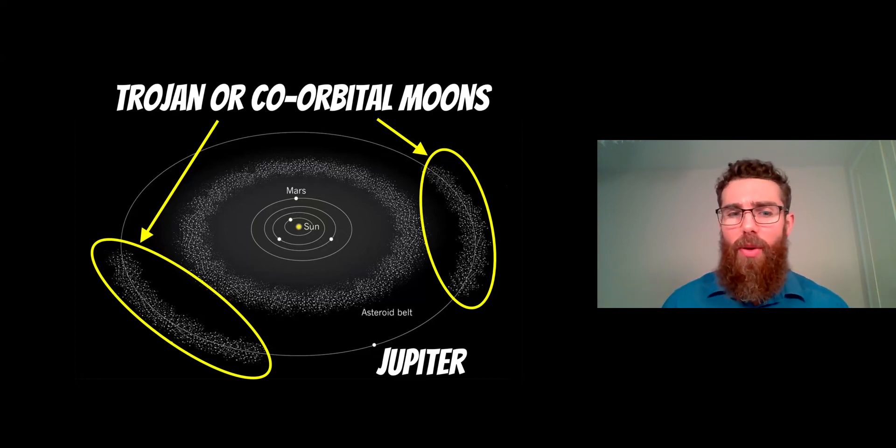Other planets have similar ones. Saturn is the only planet that has a true set of Trojan moons, where they actually orbit the planet and they're not necessarily co-orbital with the planet.